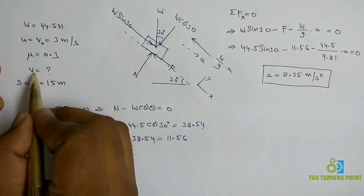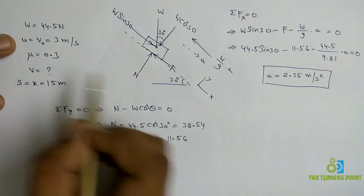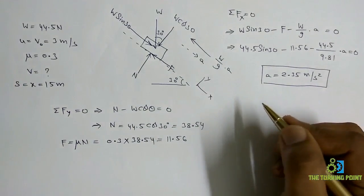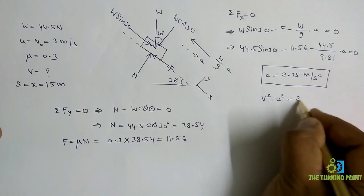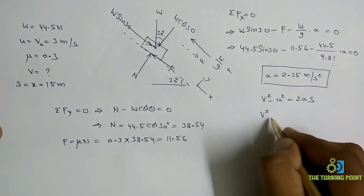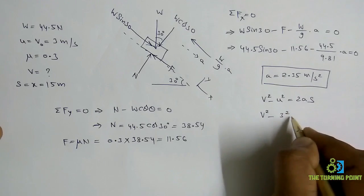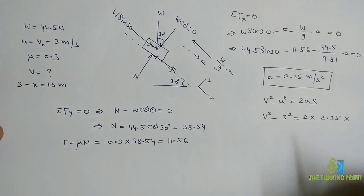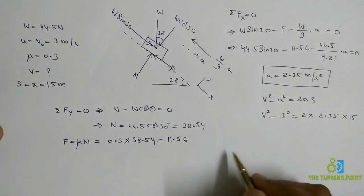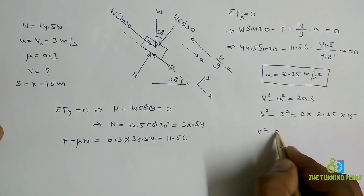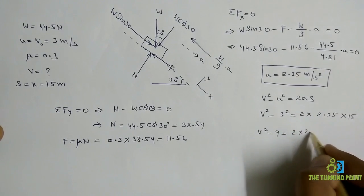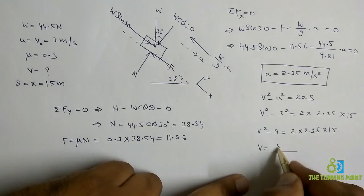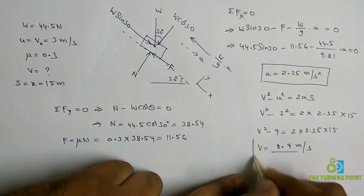To find the final velocity: initial velocity u is given, acceleration a is known, and displacement s is given. Using the kinematic equation v² − u² = 2as: v² − 3² = 2 × 2.35 × 15, so v² − 9 = 2 × 2.35 × 15. Simplifying, the final velocity v ≈ 8.9 meters per second.